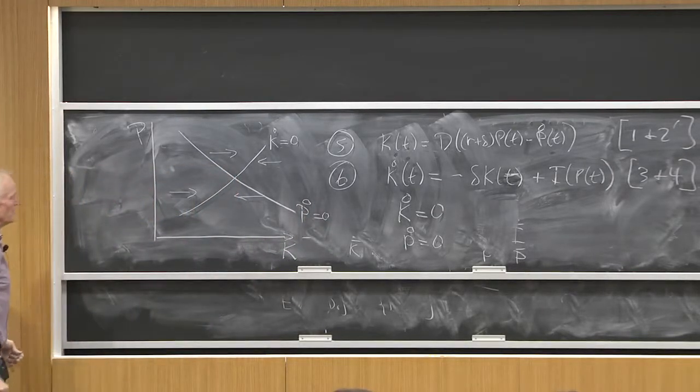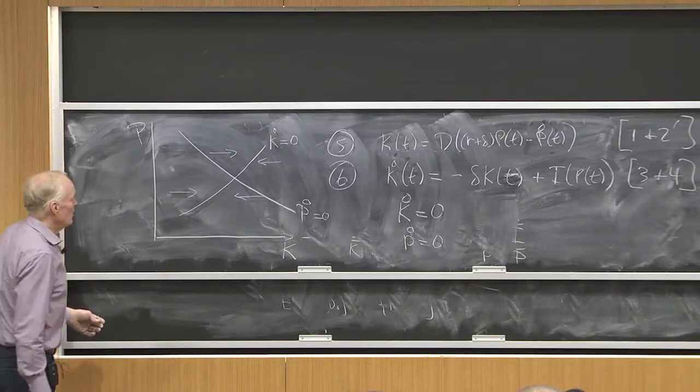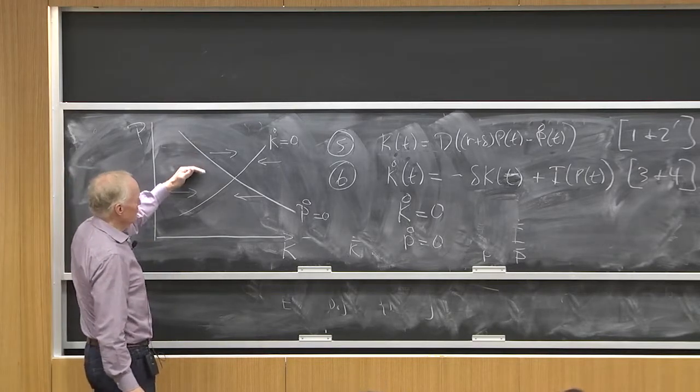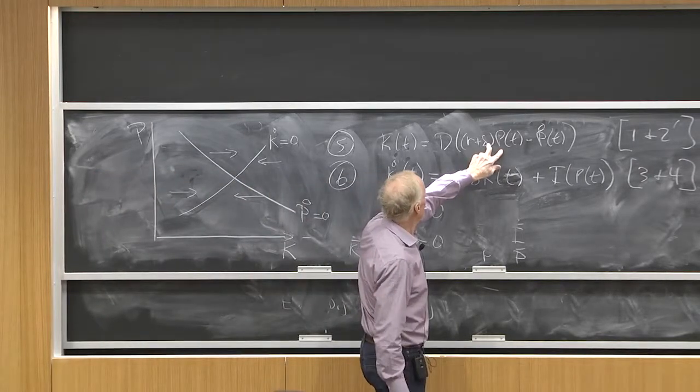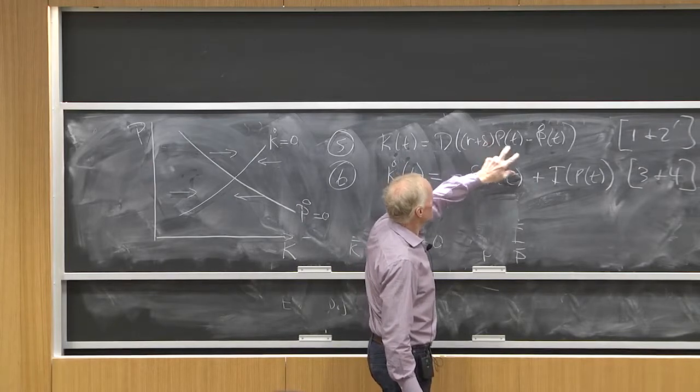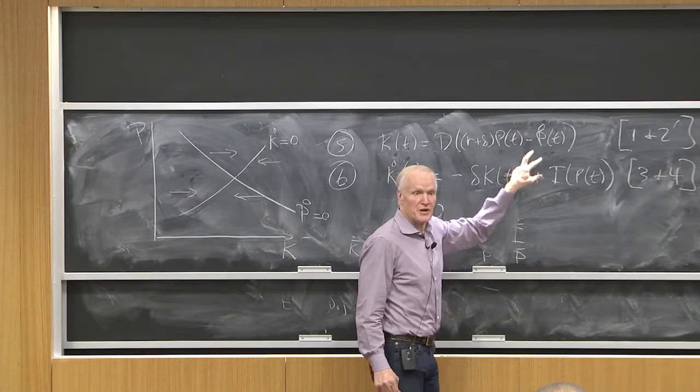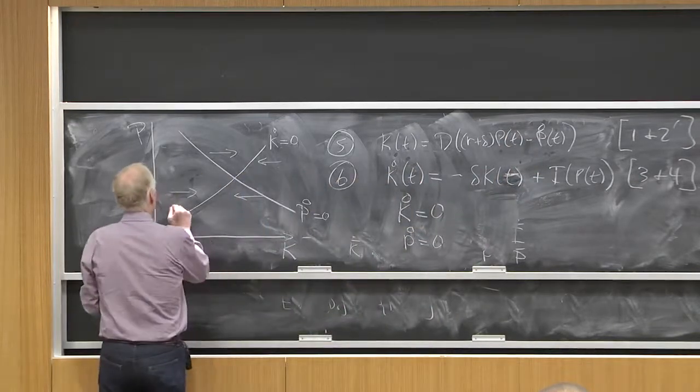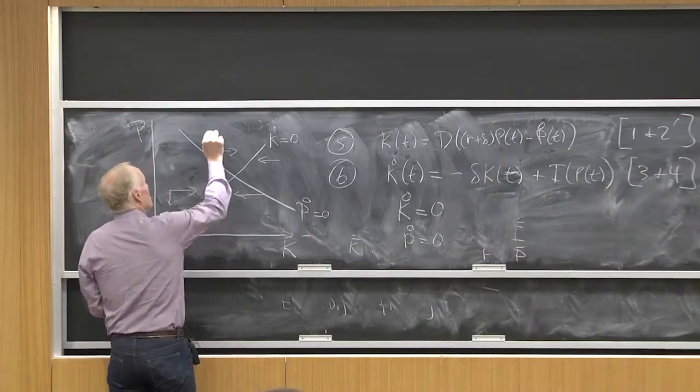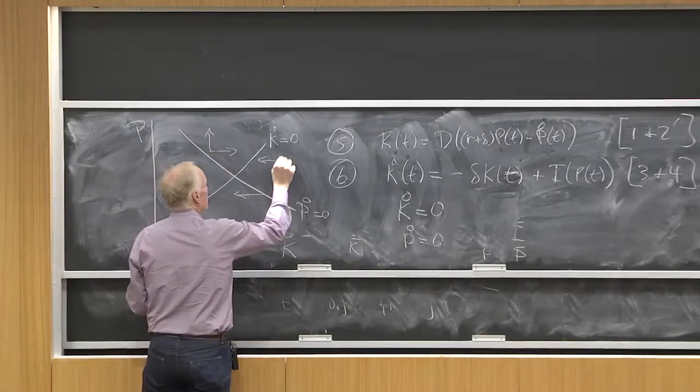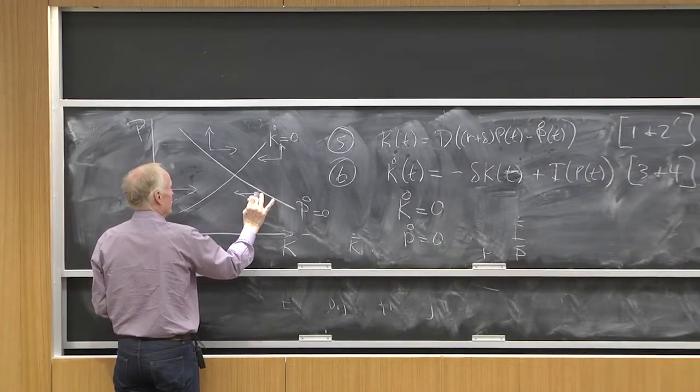Now, what's interesting is how do the dynamics go? Well, if I'm below this curve, then p is low. If p is low, then I've got to make p dot low in order to compensate. I've got to make up for each other. So below this curve, I'm going down. And above this curve, I'm going up. Like this. And down here, I'm going down.